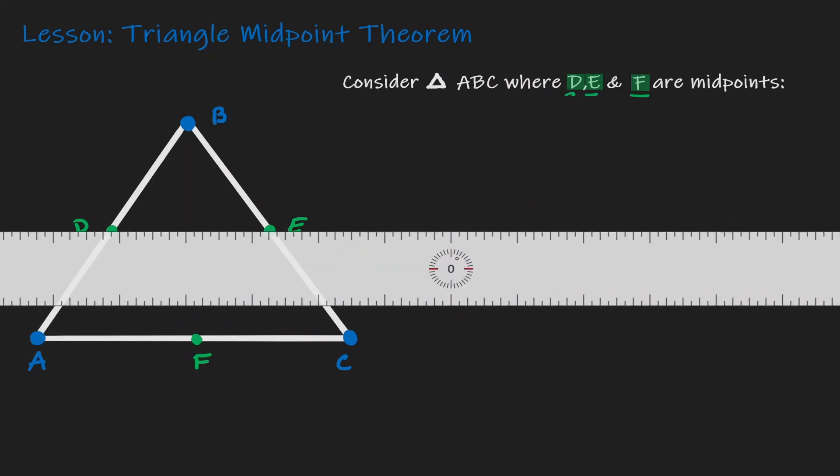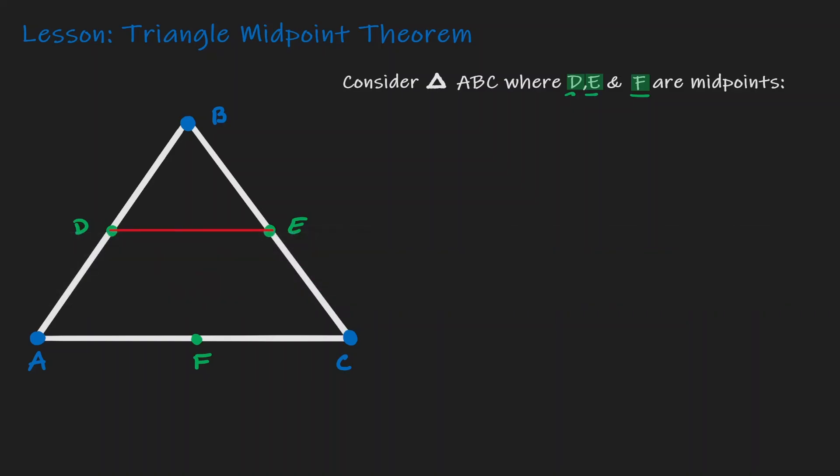Let's start with a ruler and connect the midpoint D to the midpoint E. So here we have a line segment DE. Now this line segment has a special relationship with the side that is opposite to it, which is AC. Let's highlight them.